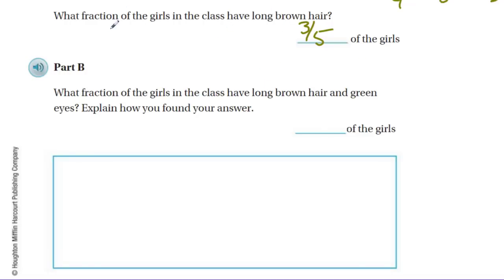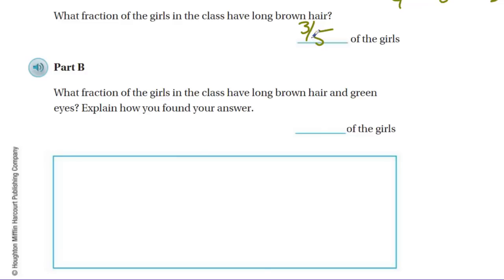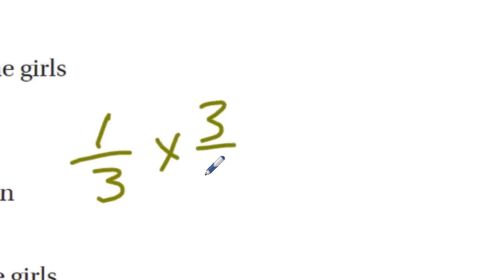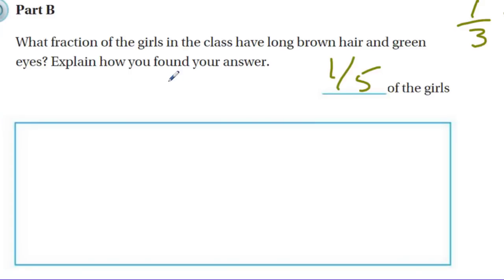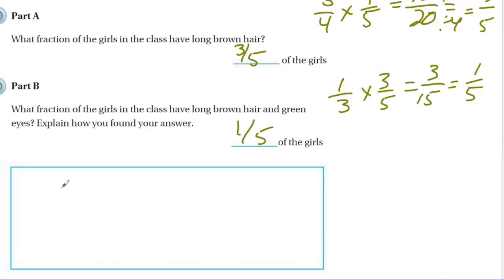Now of the girls with long brown hair, one-third of them have green eyes. What fraction of the girls in the class have long brown hair and green eyes? We take one-third of three-fifths: one-third times three-fifths equals three-fifteenths, which equals one-fifth. In part A I multiplied three-fourths and four-fifths to get three-fifths — the fraction of girls with long brown hair. Then I multiplied one-third times three-fifths to find the fraction with long brown hair and green eyes, which is one-fifth.